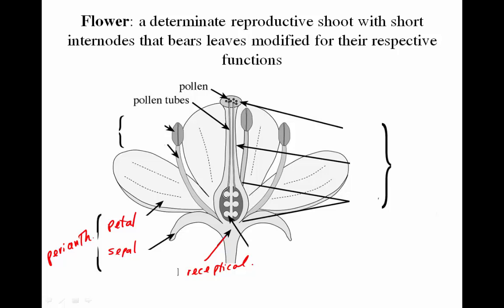The male parts consist of two structures: the anther and the filament, and together those form the stamen. The collective name for all the stamens together is the androecium — 'andros' meaning man, 'oecium' meaning house — so the house of the man.